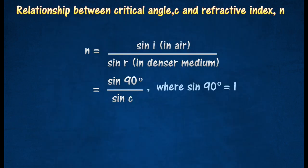From the formula of refractive index n equal to sine i over sine r, the refractive index from air to the denser medium can also be written as n equal to 1 over sine of critical angle.